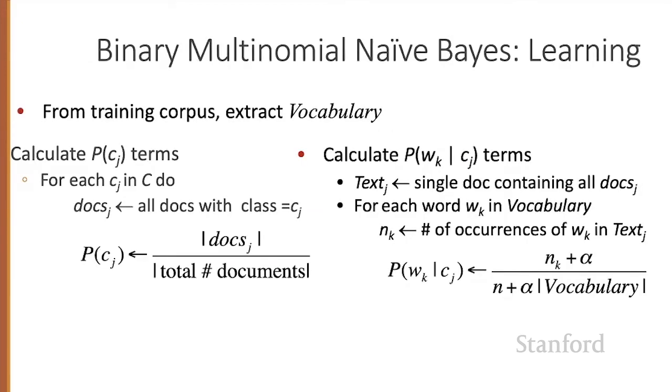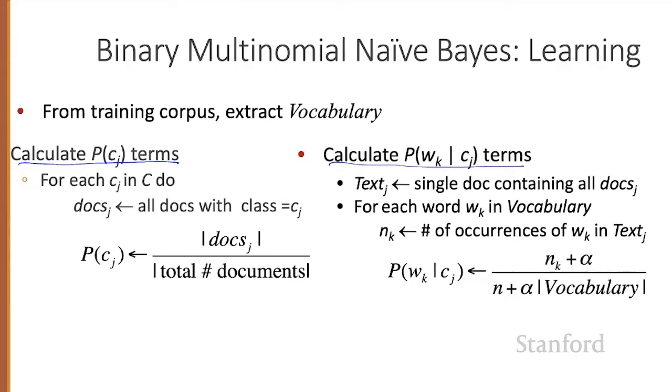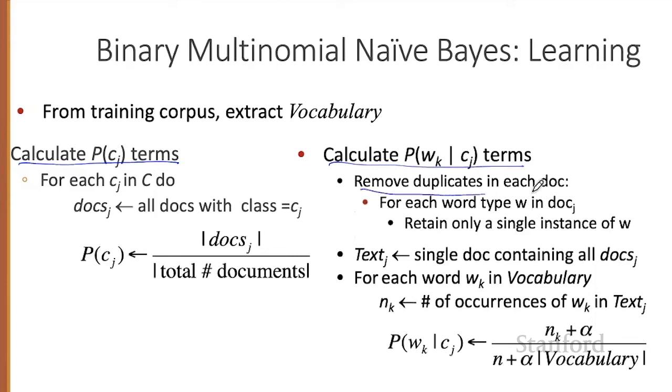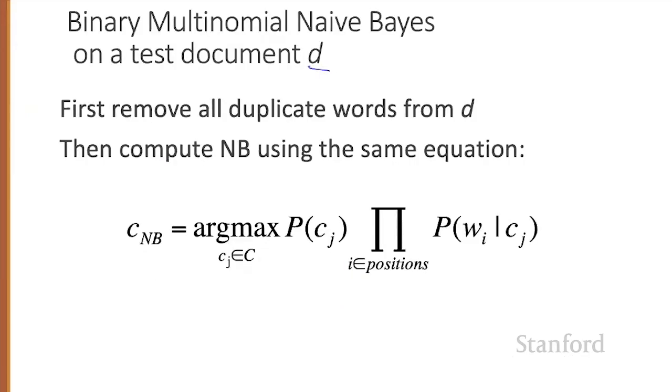The algorithm for binary multinomial naive Bayes is very similar to our non-binary naive Bayes algorithm. So in training, we compute the priors in the exact same way. And there's just a slight difference in how we compute the likelihoods. Before we do our likelihood computation, we just remove all the duplicates in each document. In other words, for each word type W in a particular document J, if there's more than one copy of W, we just keep one of them. And then we concatenate the text together and compute our likelihoods just as we did before. On a test document D, we similarly remove all the duplicate words from D, and then we compute naive Bayes using our standard equations before.